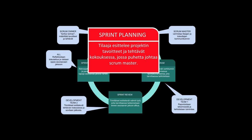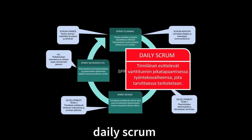Ensimmäinen Sprinti käynnistyy suunnittelukokouksella, johon kaikki osallistuvat. Siinä esitellään projektin tehtävät ja sovitaan ensimmäisen Sprintin tehtävistä ja työnjaosta. Tekijäryhmä pitää päivittäisiä kokouksia, joissa kukin esittelee mitä on tehnyt, mitä tekee seuraavaksi ja ilmoittaa jos tarvitsee apua. Olennaista on, että päiväkokous on informatiivinen: siinä nopeasti käydään tilanteet läpi ja jatketaan sitten töitä. Kouluympäristössä päiväkokouksen jaksotus pitää miettiä uudestaan, kuten Sprintitkin.